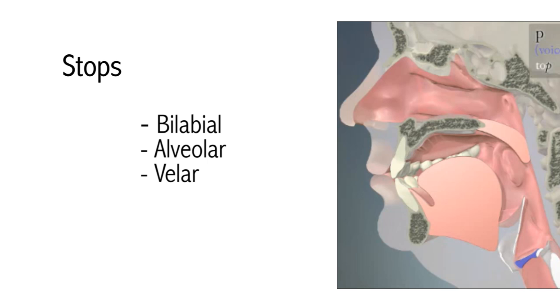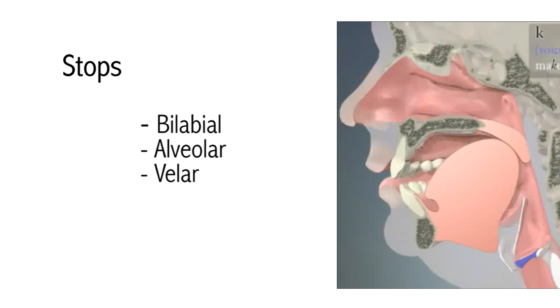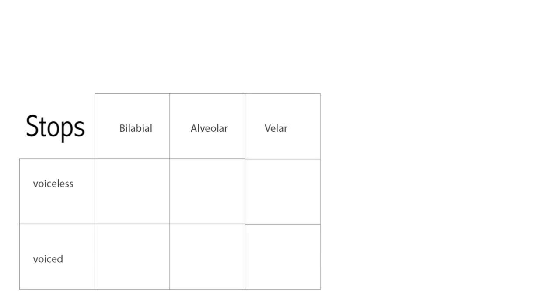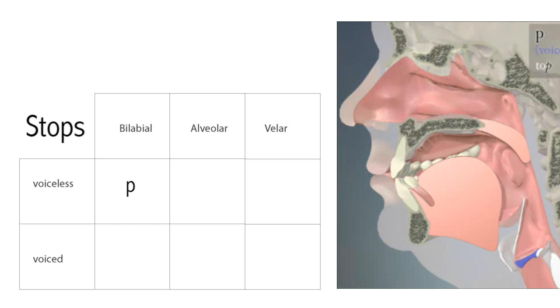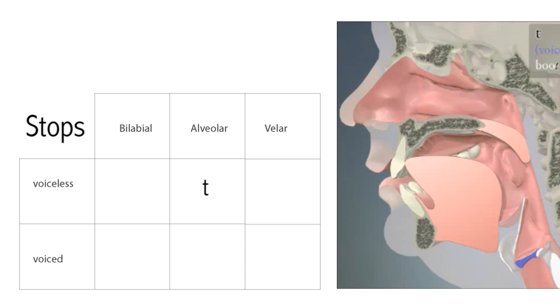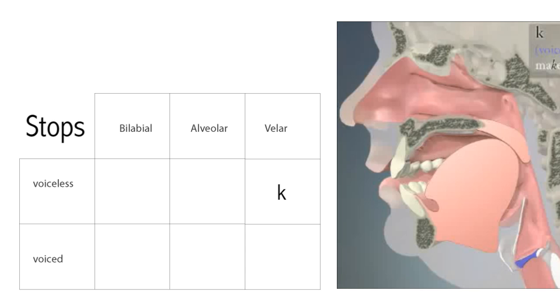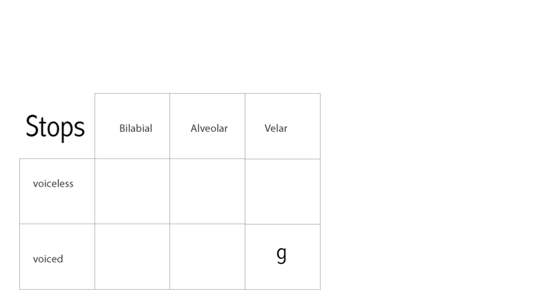There are six stops in English, made at three places of articulation: bilabial, alveolar, and velar. At each place of articulation there is a voiced and voiceless stop. P is a voiceless bilabial stop. B is a voiced bilabial stop. T is a voiceless alveolar stop. D is a voiced alveolar stop. K is a voiceless velar stop. G is a voiced velar stop.